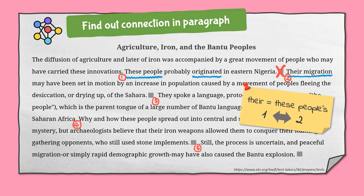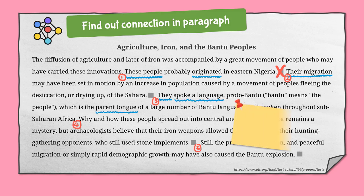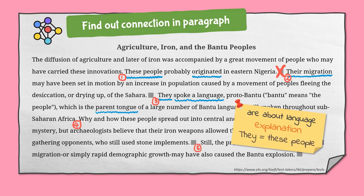The third sentence starts with another pronoun, 'they.' Other keywords — 'spoke a language' and 'parent tongue' — are all about language. They are explanations of the highlighted sentence. So the pronoun 'they' refers to 'these people' in the highlighted sentence. The second square is correct.